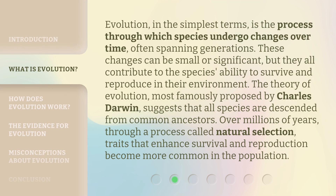Evolution, in the simplest terms, is the process through which species undergo changes over time, often spanning generations. These changes can be small or significant, but they all contribute to the species' ability to survive and reproduce in their environment. The Theory of Evolution, most famously proposed by Charles Darwin, suggests that all species are descended from common ancestors. Over millions of years, through a process called natural selection, traits that enhance survival and reproduction become more common in the population.